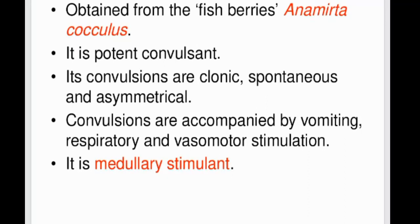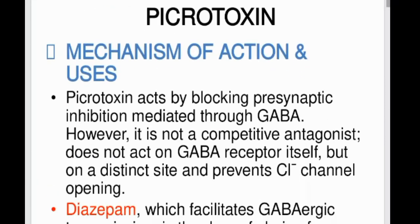Picrotoxin is obtained from the fish berry Anamirta cocculus. It is a potent convulsant; its convulsions are clonic, spontaneous, and asymmetrical, accompanied by vomiting and respiratory and vasomotor stimulation. It is a medullary stimulant.